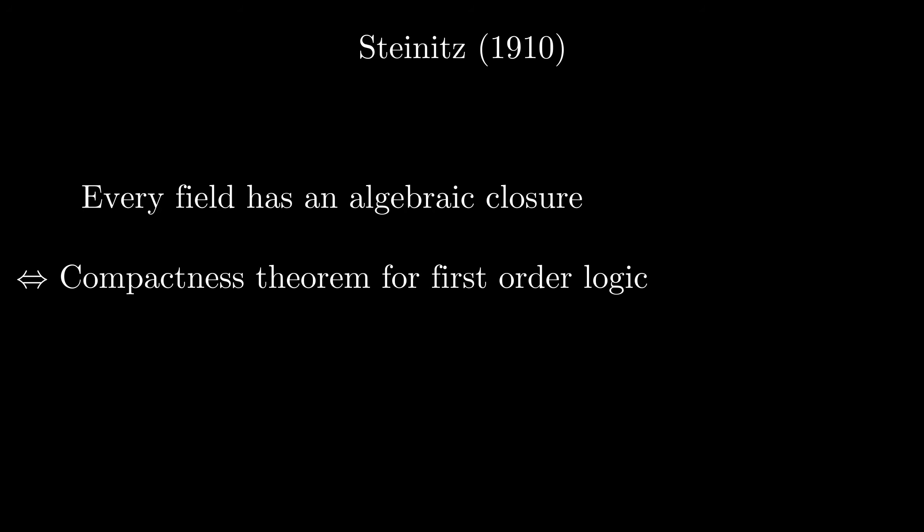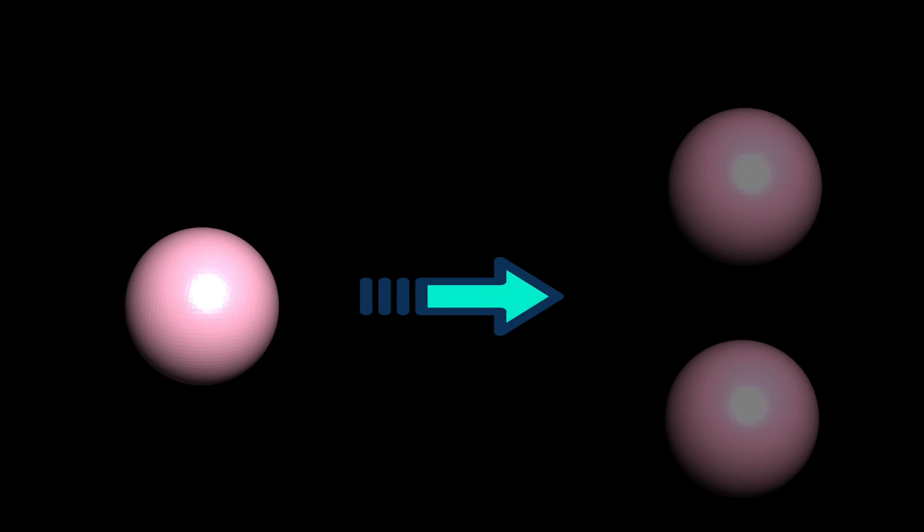To be precise, it is equivalent to a slightly weaker assumption called the compactness theorem. So this axiom is of indisputable importance. But do you remember the infamous Banach-Tarski paradox? A spherical ball can be partitioned into a finite number of pieces that can be reassembled to form two balls, each identical to the initial one. The proof of this paradox, surprisingly, depends on the axiom of choice.